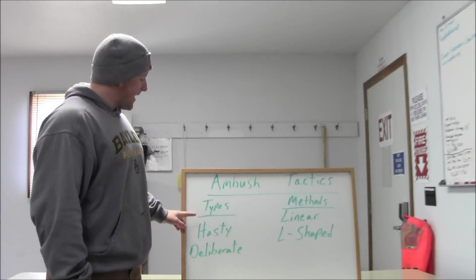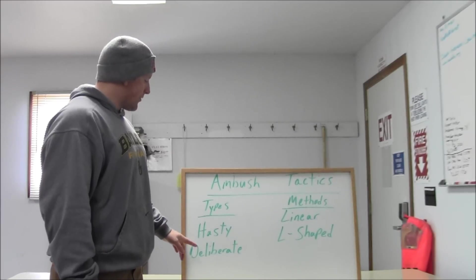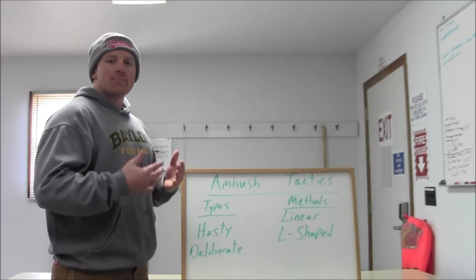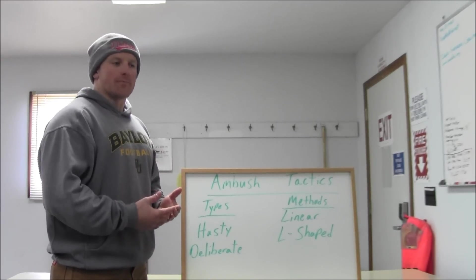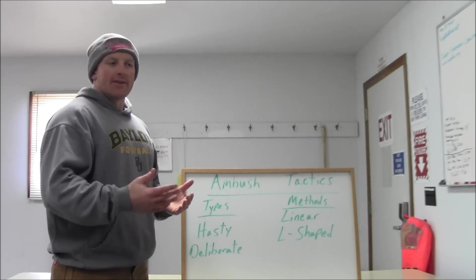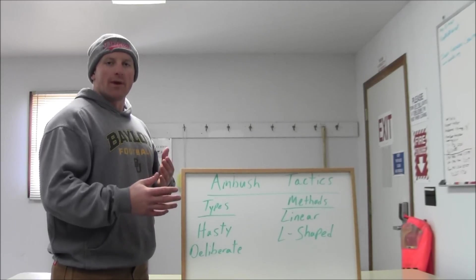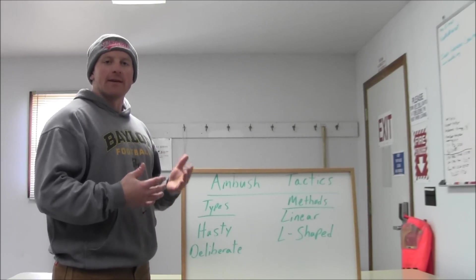So we've got two main types of ambush. We've got the hasty ambush and the deliberate ambush. So hasty is obviously something that we put together on the spot. We notice the enemy moving in a certain area in a certain direction and so we want to move to counter that. So we set up a hasty ambush.